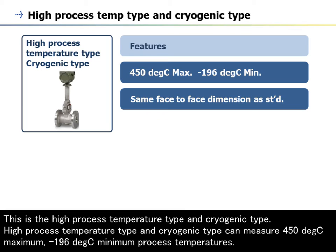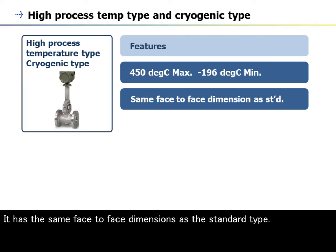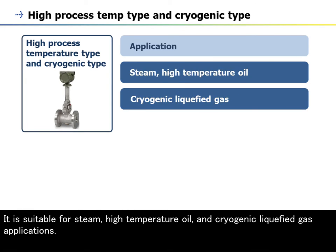This is the High Process Temperature Type and Cryogenic Type. It can measure up to 450 degrees Celsius maximum and minus 196 degrees Celsius minimum process temperatures. It has the same face-to-face dimensions as the standard type and is suitable for steam, high temperature oil, and cryogenic liquefied gas applications.